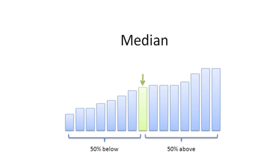If there are an even number of values in a dataset, we can report the average of the two middle numbers as the median of the dataset. There are two steps involved with finding the median of a dataset.